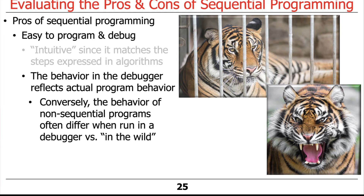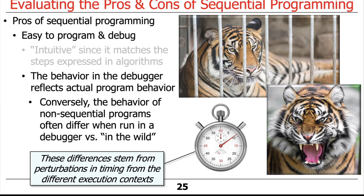When you're stopped in one thread in the debugger, other threads are still running, so the behavior isn't quite the same as in actual execution — making concurrent programs harder to debug. The driving force here is that there are perturbations in timing from different execution contexts. With concurrent approaches, debugger behavior is not the same as actual execution, whereas in a sequential program it's much closer.